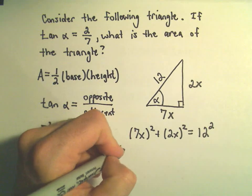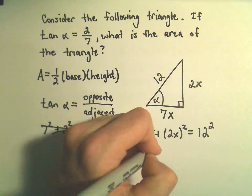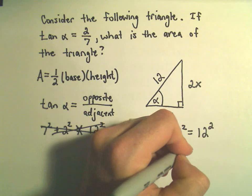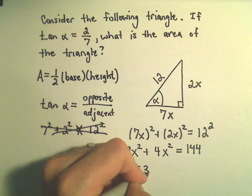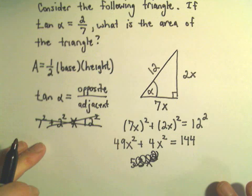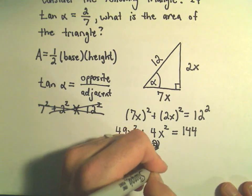All right, so 7x times 7x is going to give us 49x squared. 2x squared is going to give us 4x squared. 12 squared is 144. So, 49 plus 4, that's going to give us 53x. Whoops, I almost wrote x to the 4th. We'll get 53x squared equals 144.